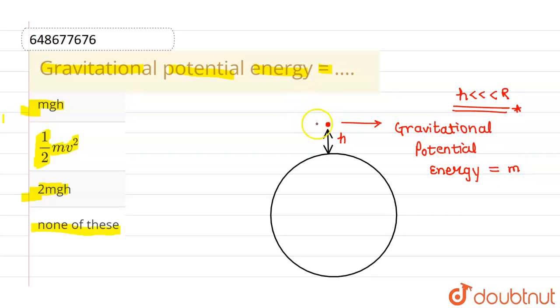And let us suppose mass of this particle is m, so m into acceleration due to gravity into height h. This is the gravitational potential energy possessed by a particle at a height h from the earth's surface.